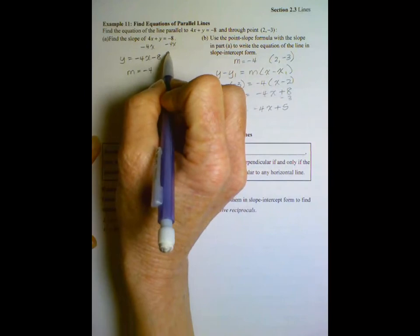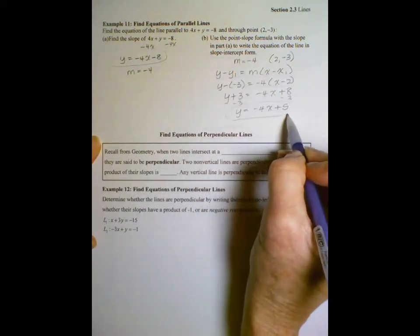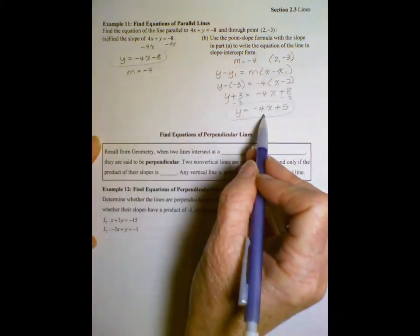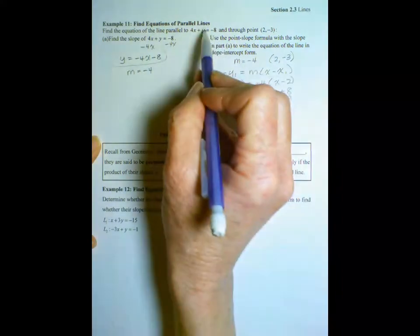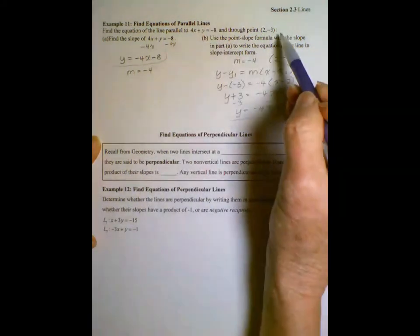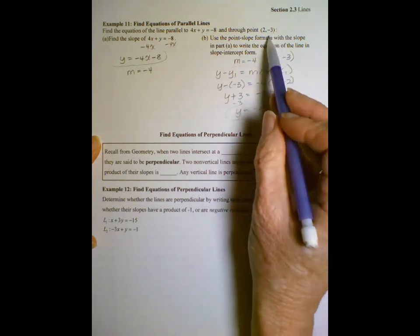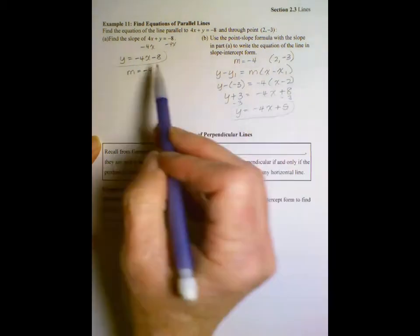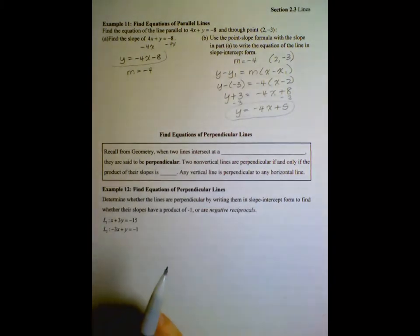So we had y equals negative 4x minus 8. Y equals negative 4x plus 5. They have the same slope. They have different y-intercepts. This is the equation for a line parallel to that line that passes through this point. By putting that point in there, I'm saying this point is on the line. So we have found that equation. That's the type of problems we'll see for parallel lines.